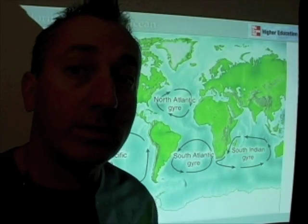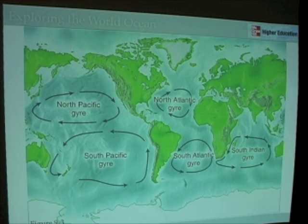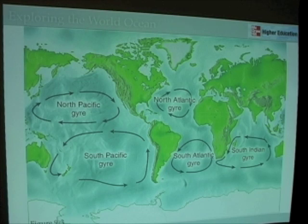You might be asking: where's the North Indian gyre? It just so happens that the continent of India sticks down into the Indian Ocean and prevents continuous or semi-continuous circulation in the North Indian Ocean. So we don't recognize a North Indian Ocean gyre. Instead, the circulation there is driven by monsoonal processes — the currents actually reverse direction seasonally because of heating and cooling over land.